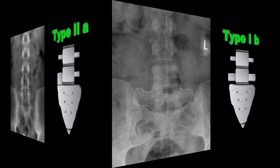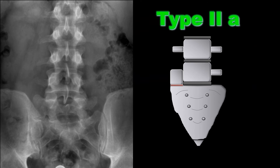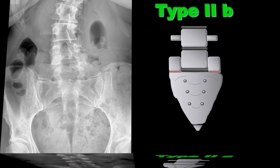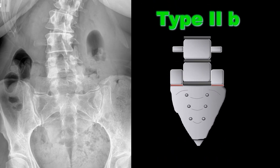A Type 2 lumbosacral transitional segment is very common. This is where we'll see a pseudo-articulation of the transverse process with the sacrum. A Type 2b is bilateral enlargement of the transverse processes which form pseudo-articulations with the sacrum. These are common and have a higher statistical probability of disc herniations at the level above, so that's something to take clinical note of.